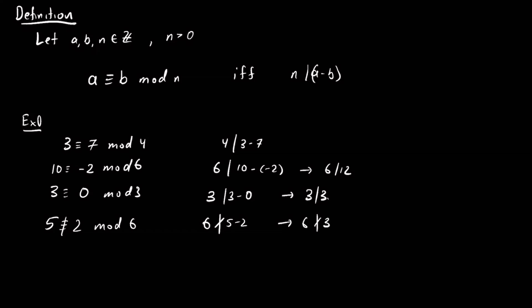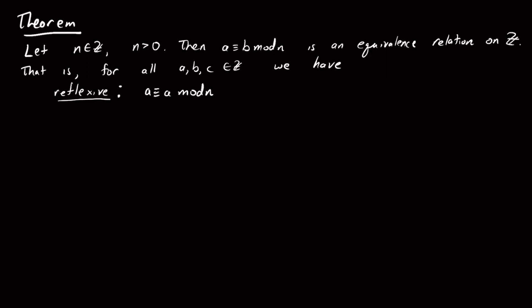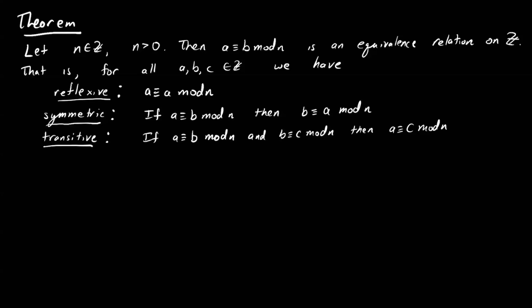So this is the definition we're going to work with, and we're going to prove that congruence modulo n is an equivalence relation. We want to show that for all integers a, b, and c, we have the three properties of an equivalence relation: one, that this relation is reflexive, so for all integers a, a is congruent to a modulo n; two, that it's symmetric, so if a is congruent to b mod n, then b is congruent to a mod n; and three, that it's transitive, so if a is congruent to b mod n and b is congruent to c mod n, then a is congruent to c mod n. So let's begin our proof.